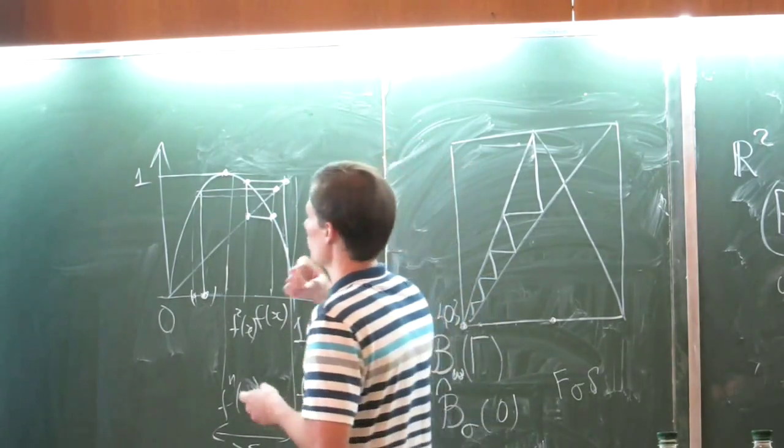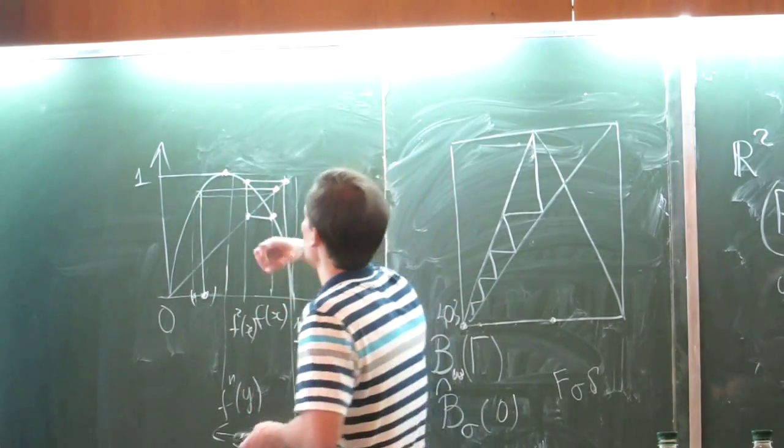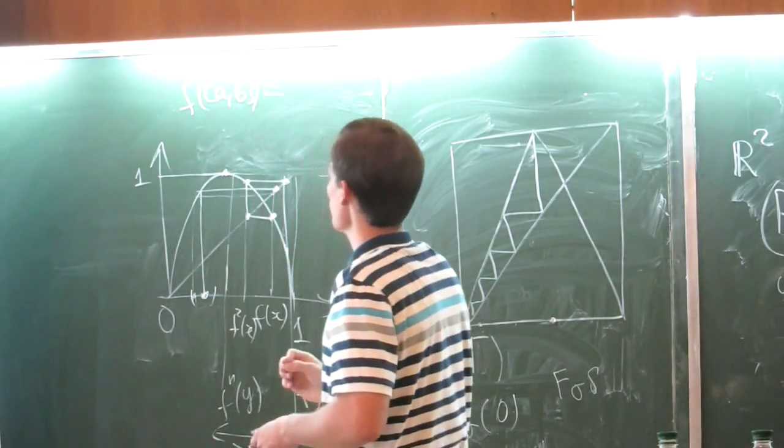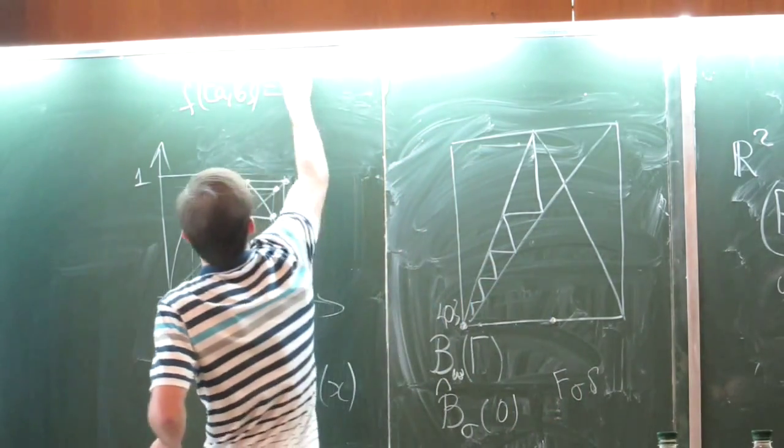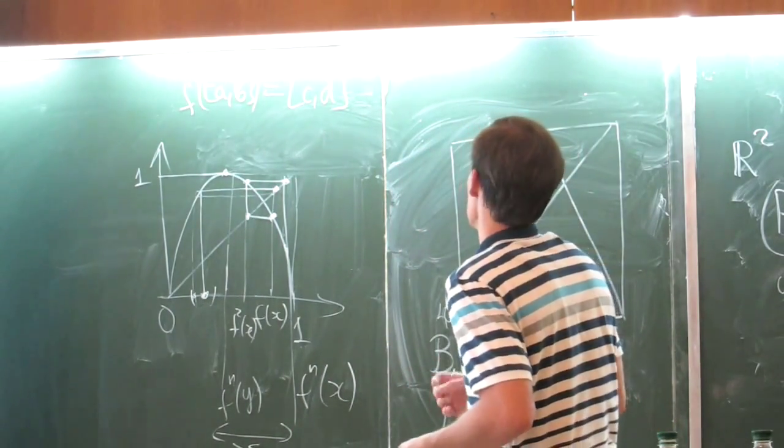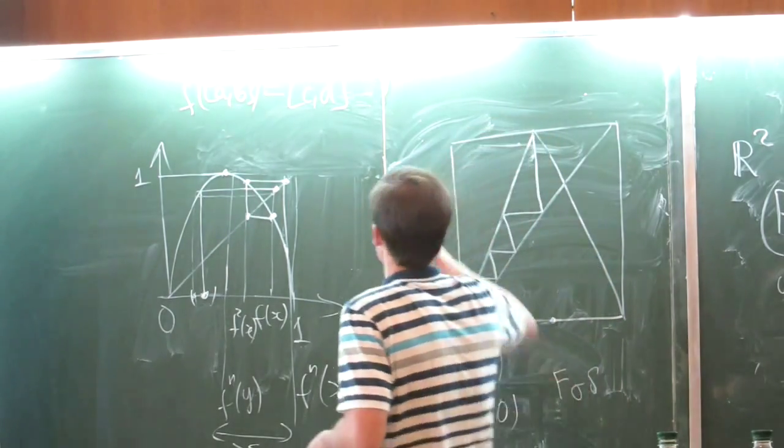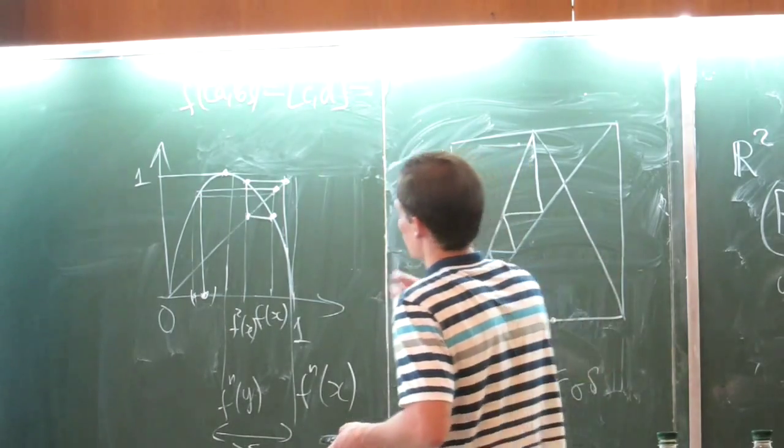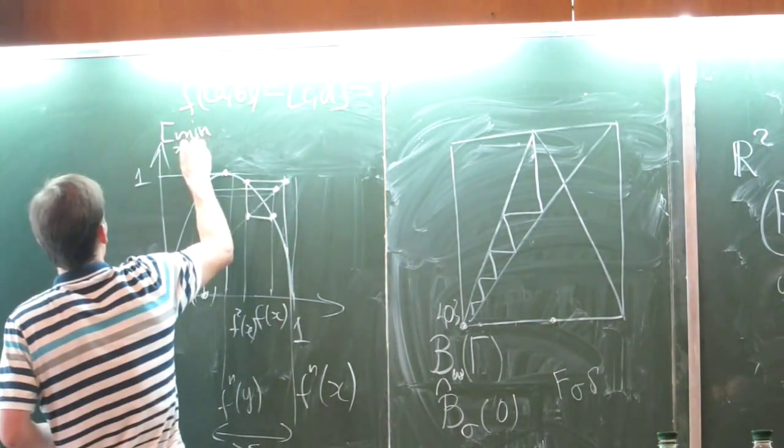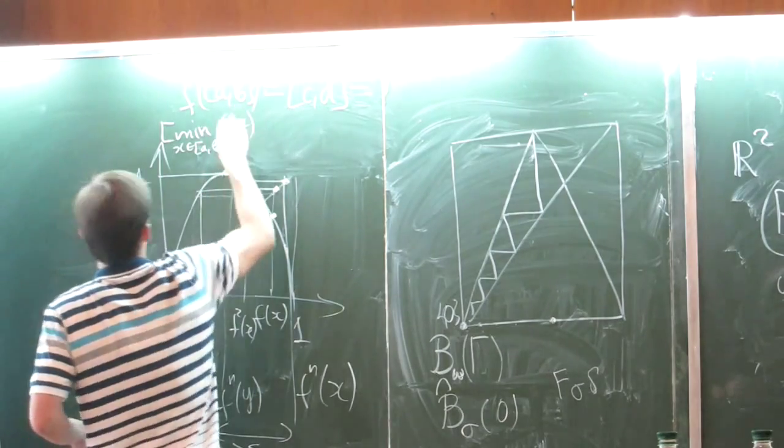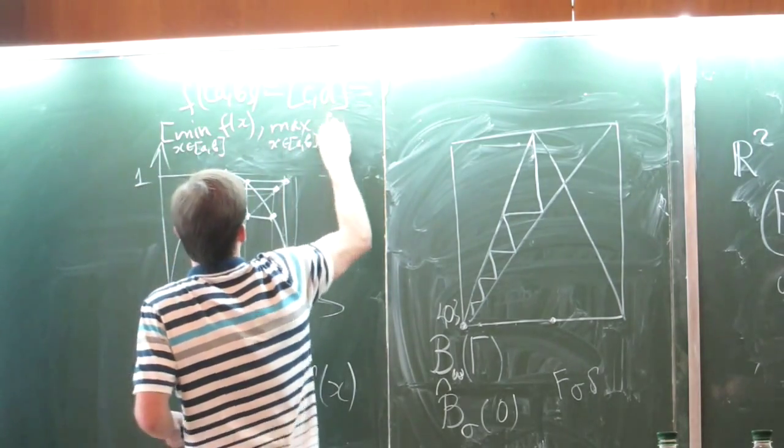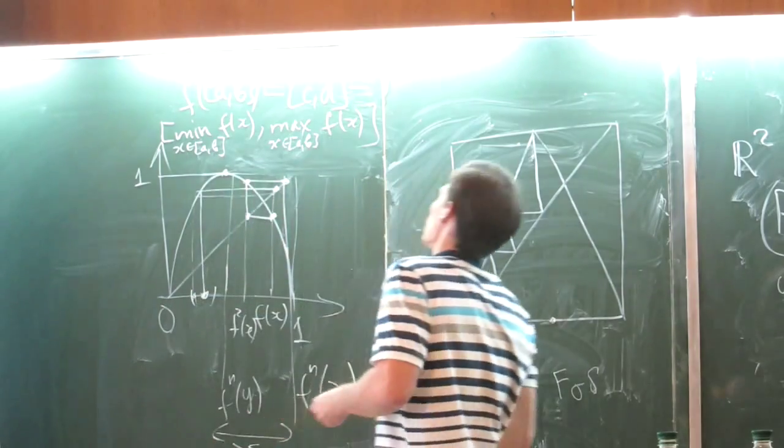For example, if I is an interval, then clearly if F is continuous, for example, for this parabola, the image of a segment is also a segment. It is the exact formula which says us that this segment begins at the minimum of the function F on the initial segment.